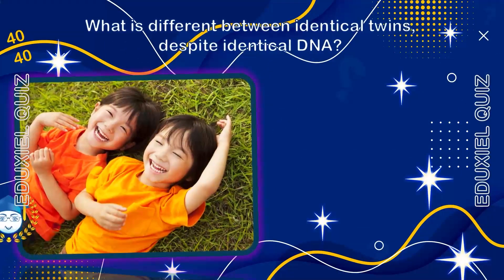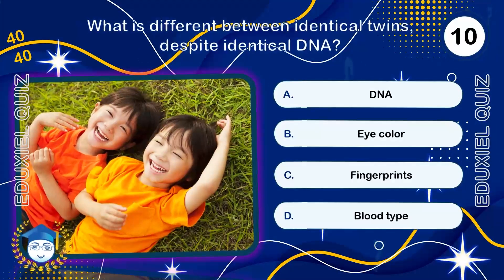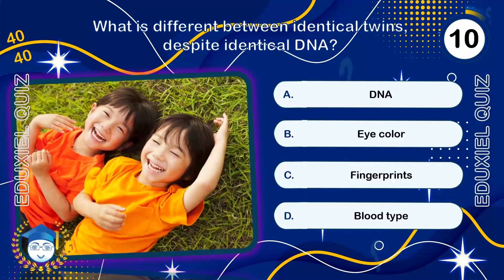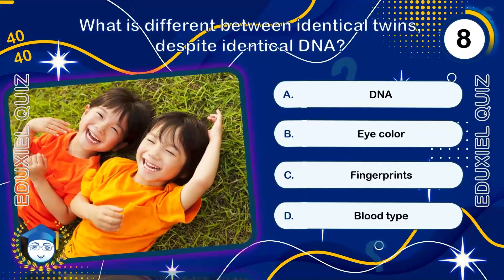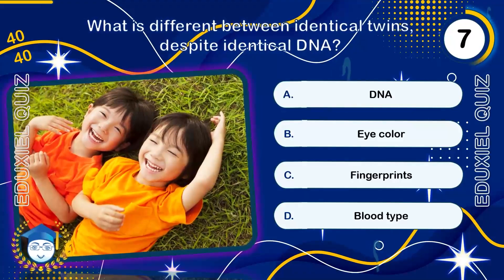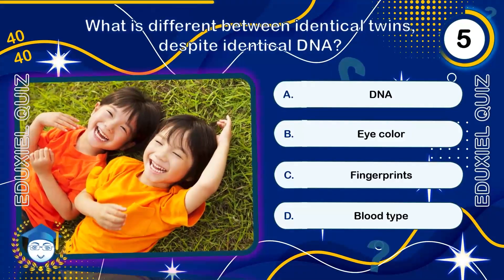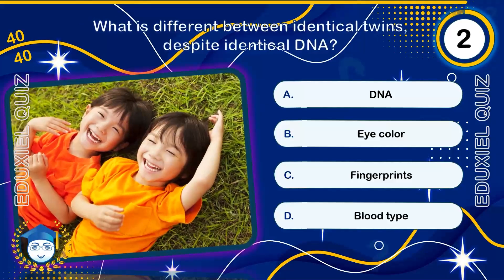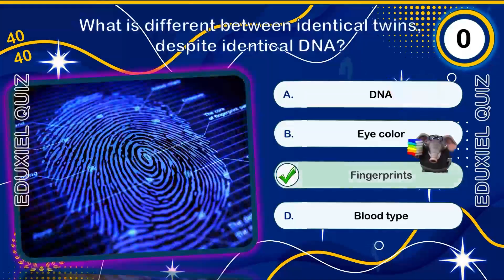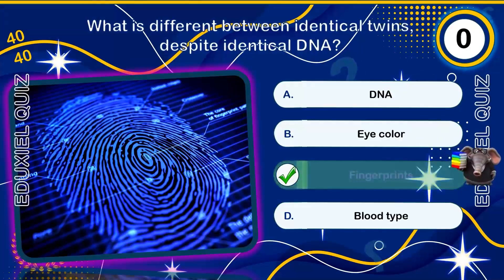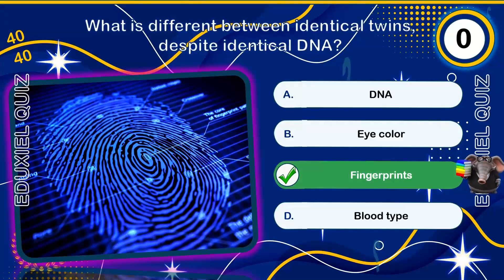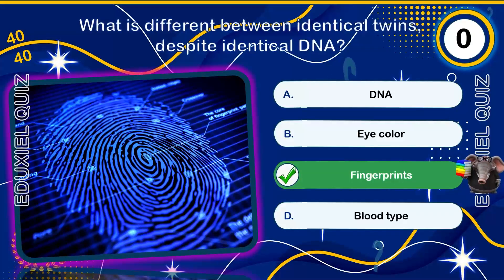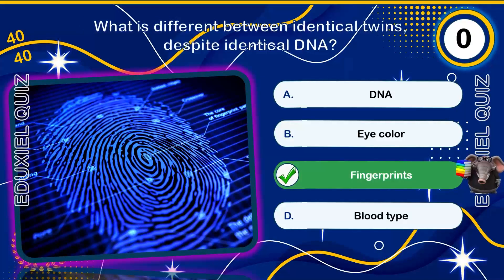What is different between identical twins, despite identical DNA? Fingerprints. Although their DNA is identical, the random pressures and unique movements within the womb during development cause slight differences in the formation of the ridge patterns.